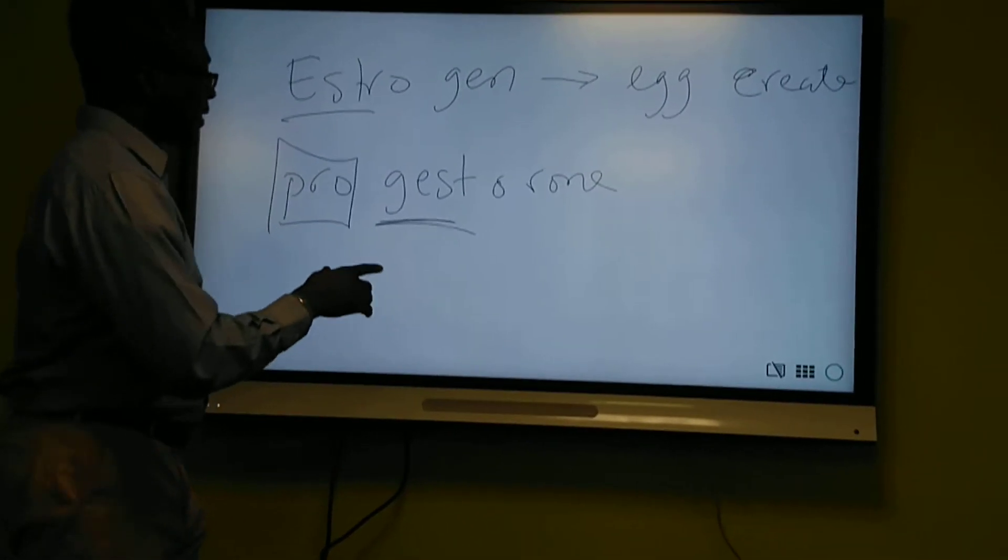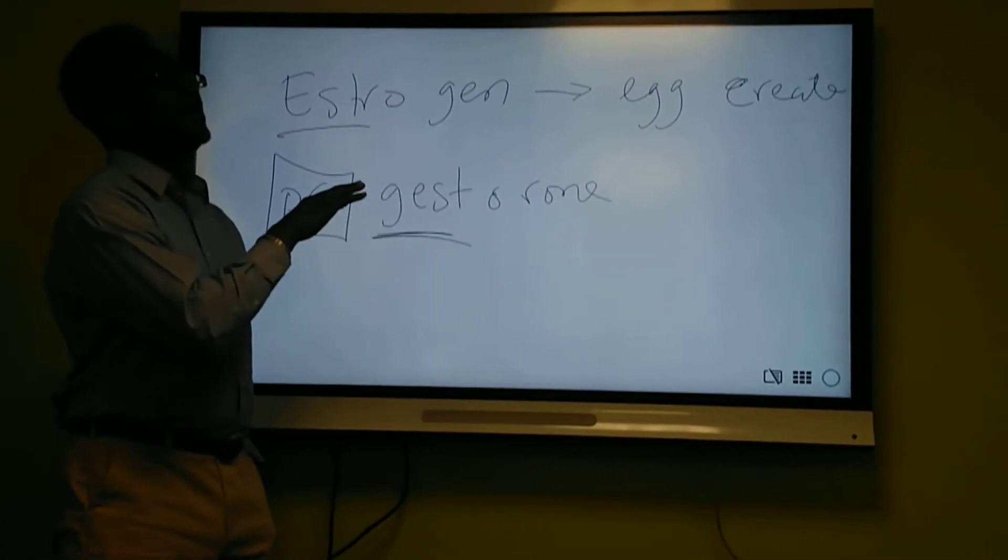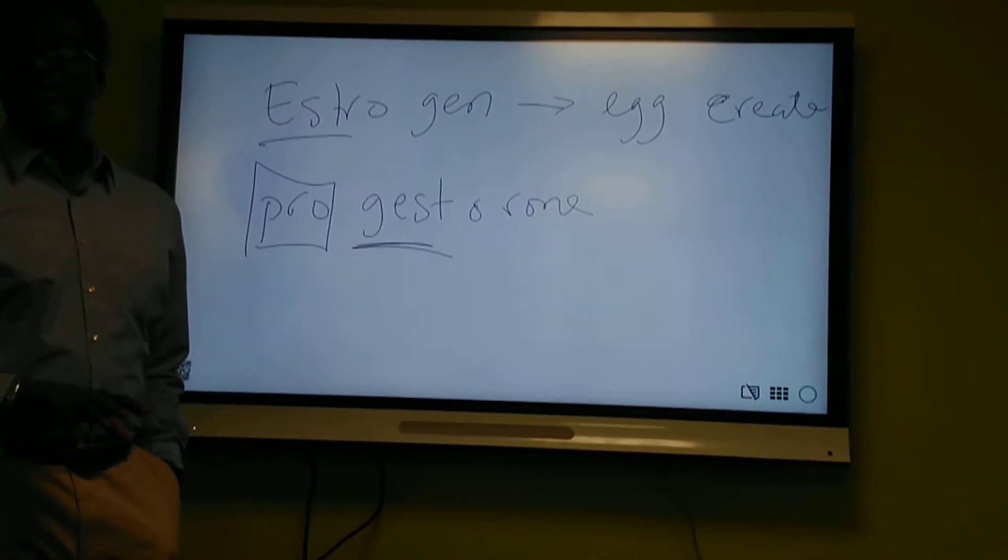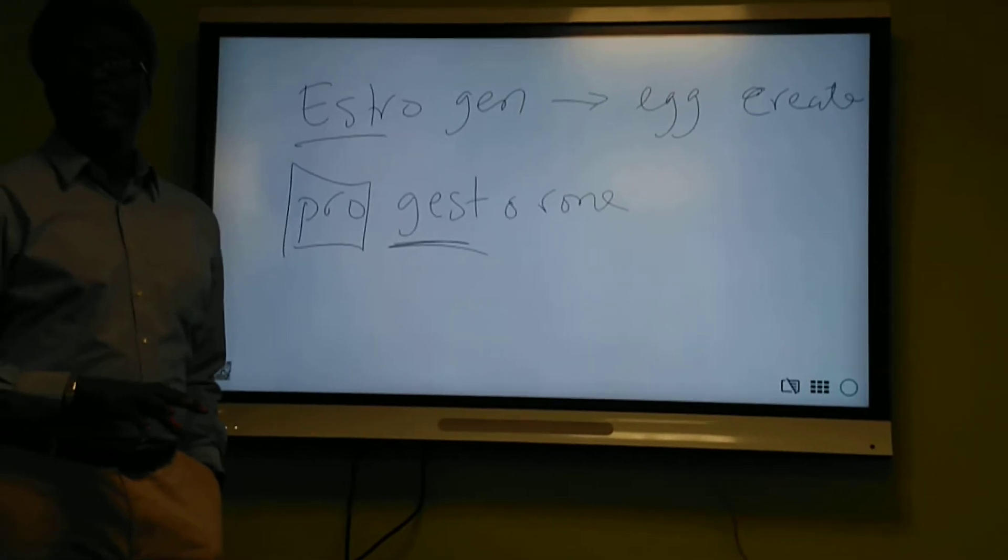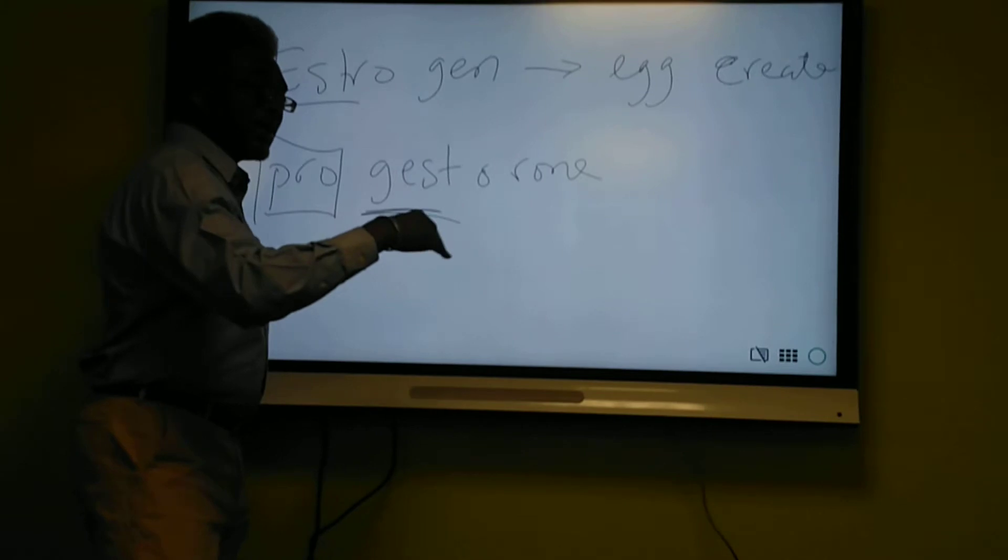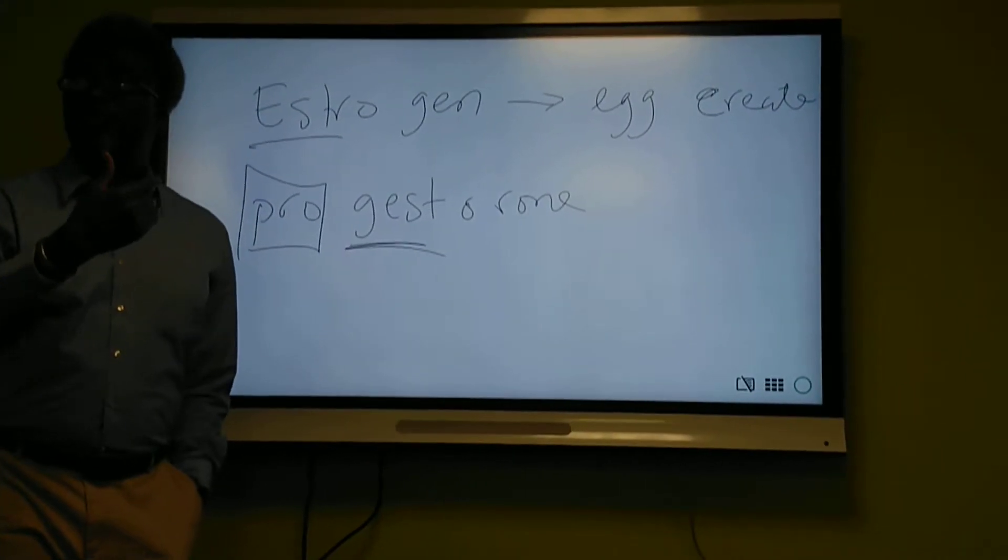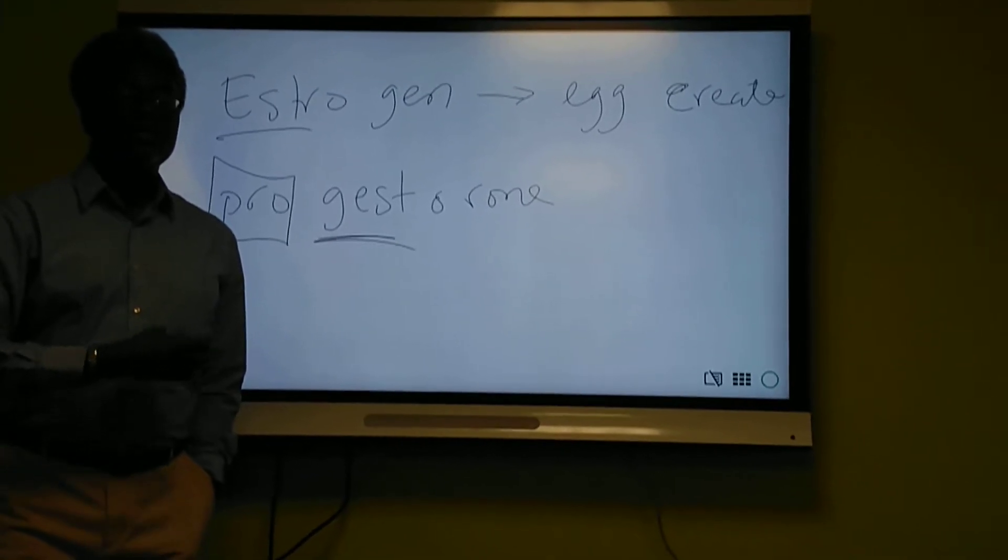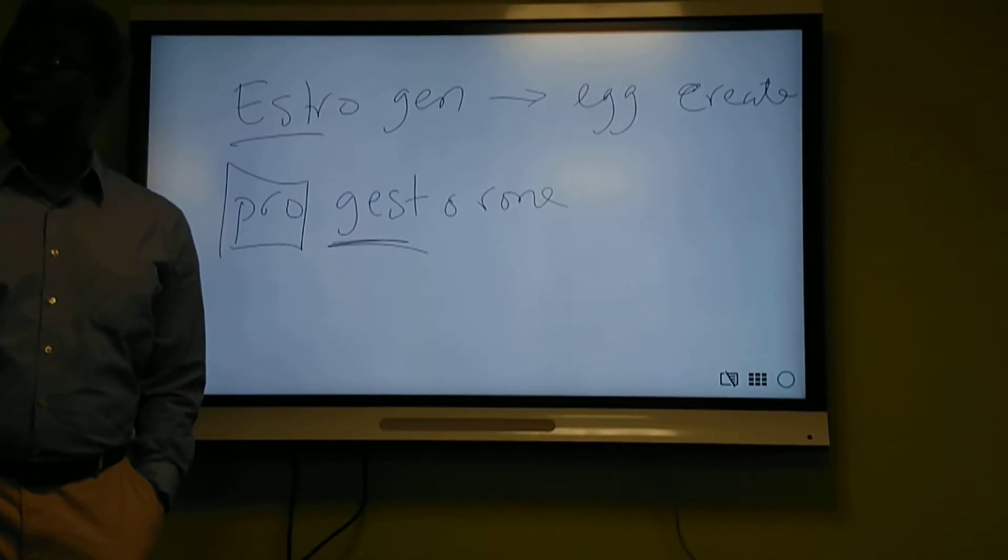All right, so progesterone encourages the possibility of having a baby stay in the uterus. To have a baby stay in the uterus, you also have to have blood supply, because the baby is going to get nutrients from the placenta. So progesterone will cause an increase in the proliferation of blood vessels to the uterine wall.